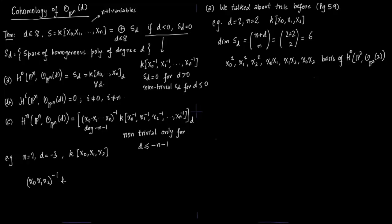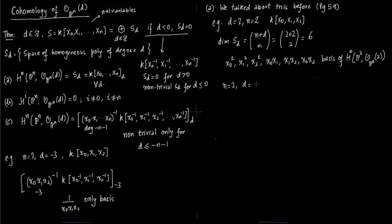For example, let n = 2 and d = −3. We are on the space k[x0, x1, x2]. Writing this for part C with degree −3, for (x0·x1·x2)^{−1} the only basis element is 1/(x0·x1·x2), which we identify with the space k. As we compute more examples, you will see why this is the only basis element.